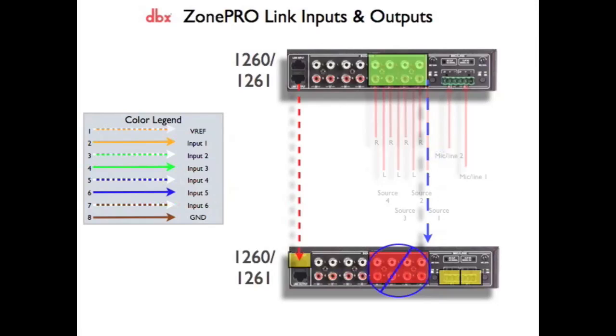This comes in handy when you want to connect different sources to the ML1 and ML2 inputs on the second device. In other words, you don't want the ML1 and ML2 inputs on this second device to receive the signal from the ML1 and ML2 inputs on the first device through the Link I.O. connection.